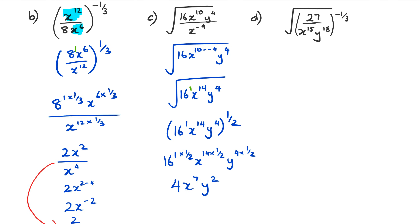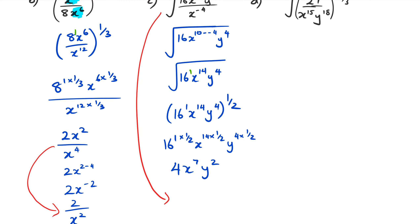As you can see, that's just another way of doing it. You could have done it exactly like question B — going from there and writing it as 16x to the power of 10, y to the power of 4, over x to the power of negative 4, with the whole thing raised to the power of half. That's just another way as well. As long as you get to the final answer, that's all that matters, so it doesn't really matter which method you choose.